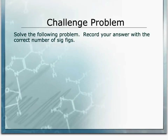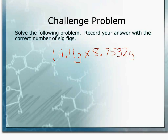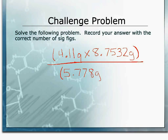Hopefully you were able to work on the practice problems and get some answers with correct sig figs. Now I'd like to present you with a challenge problem. Use the information from this video to report an answer with the correct number of sig figs. The problem is: 4.11 grams times 8.7532 grams, divided by 5.778 grams minus 2.1 grams. Calculate an answer and determine the number of sig figs for your final answer with the correct unit — we'll go through it in class tomorrow.